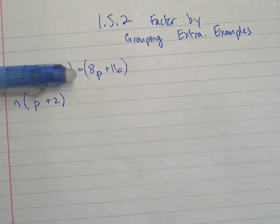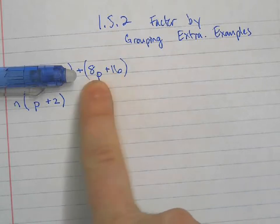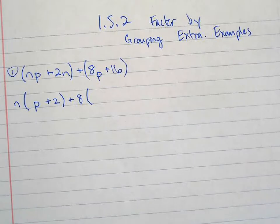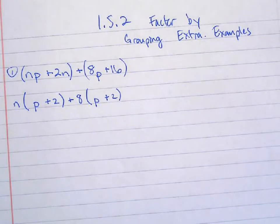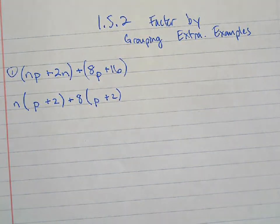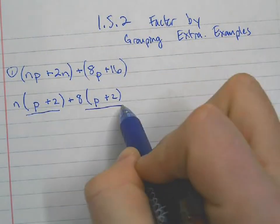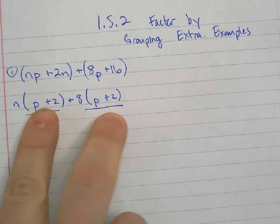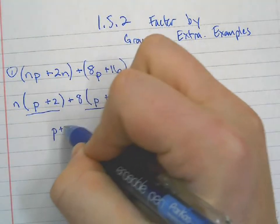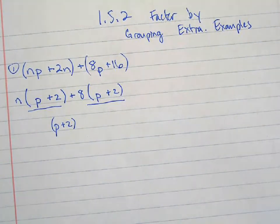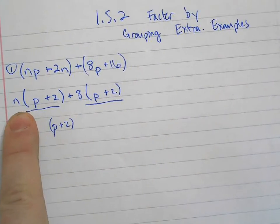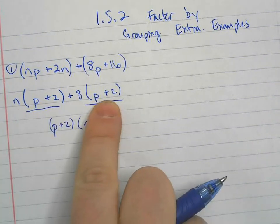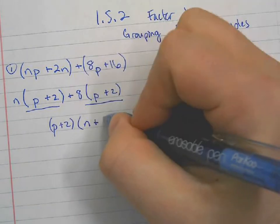Now we'll ignore our first group and just factor outside of our second group. What can factor out of both these terms? 8. And if I factor the 8 out, what do I have left behind? Do we both have P + 2 for both of them? This is that idea of factoring an expression out. If they both share P + 2, then I can factor the expression P + 2 out. And if I factor out P + 2, what's left behind? An N right here, and an 8 left behind for this one. And we've got to keep that sign in the middle.